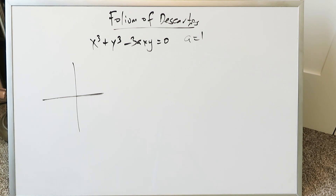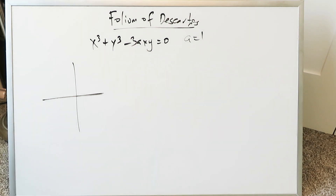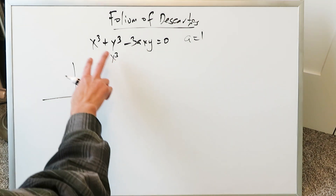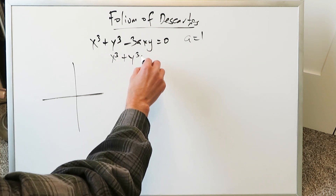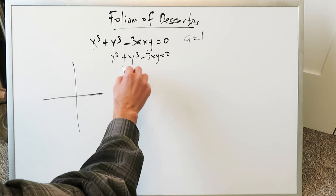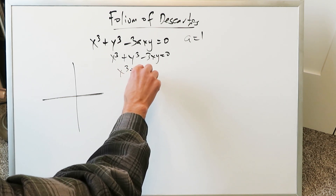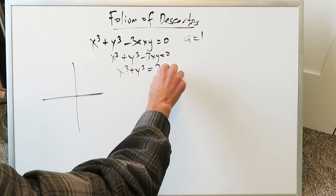A specific application with regards to that. The equation is right here: x cubed plus y cubed minus 3axy equals 0, where specifically the a value can be set to 1, and your equation becomes x cubed plus y cubed minus 3xy equals 0. You can take the 3xy to the other side and you'll have x cubed plus y cubed equals 3xy.